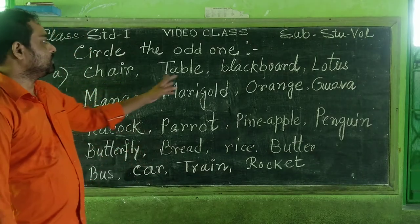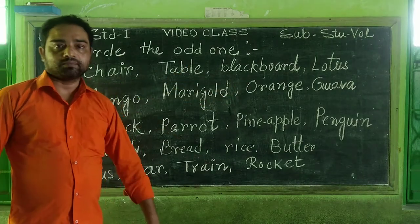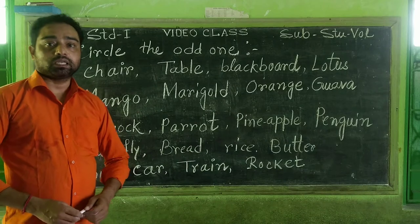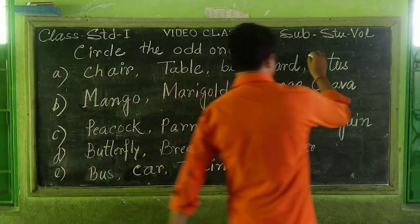So chair, table, blackboard, lotus — lotus is a flower. It does not belong with the others. So the odd one out: Satyala Orba is lotus.